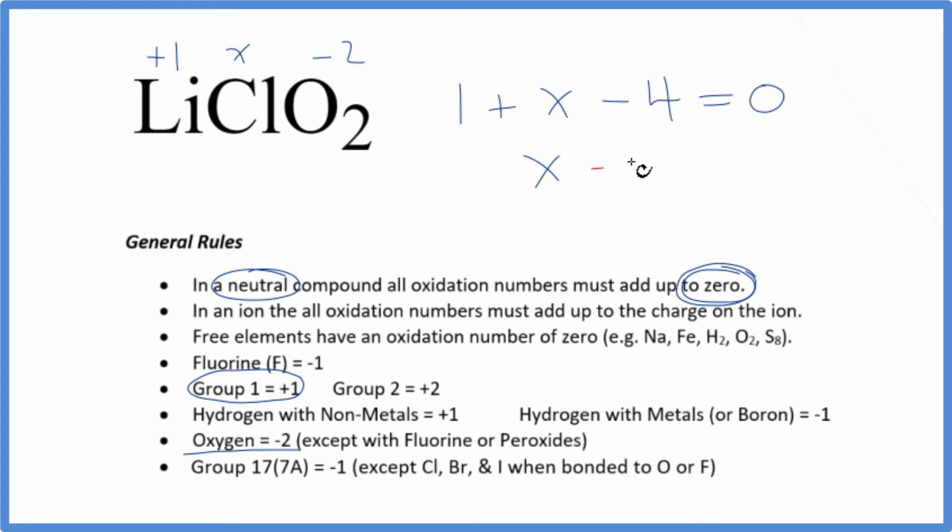So X minus three equals zero. X equals a positive three. So the oxidation number here on the chlorine is going to be positive three.